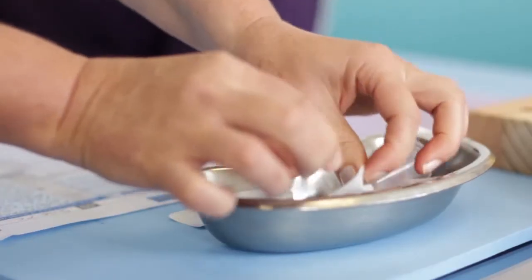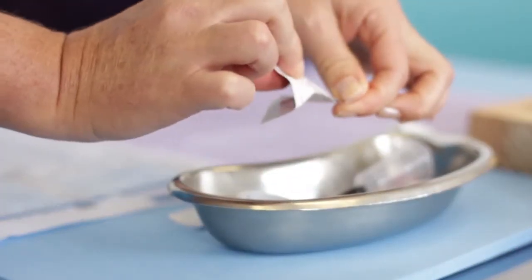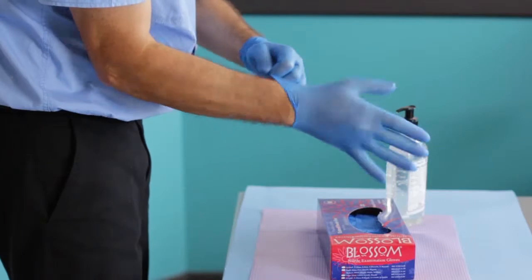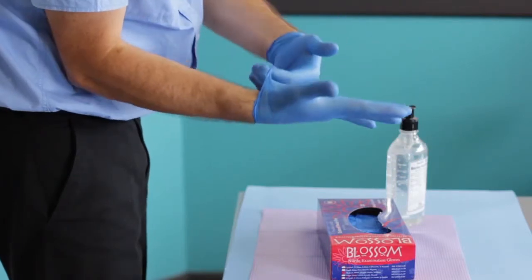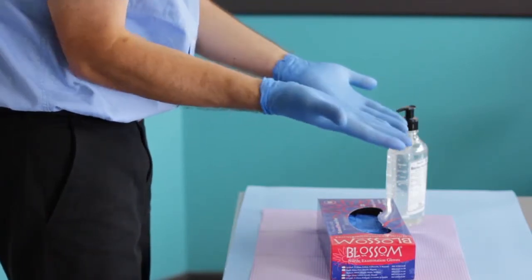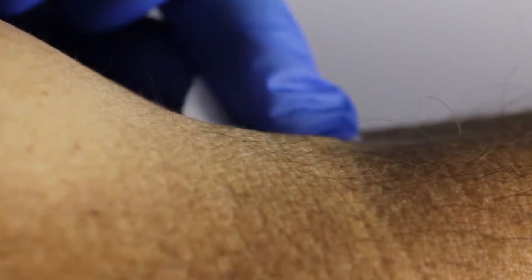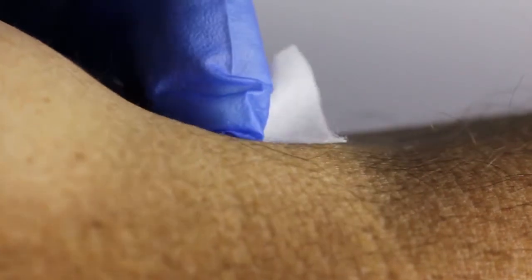Tear open an alcohol prep sachet and place on the work surface. Put on clean gloves and remove the alcohol saturated square. Cleanse for 30 seconds with circular movement starting at the intended puncture site and working outward.